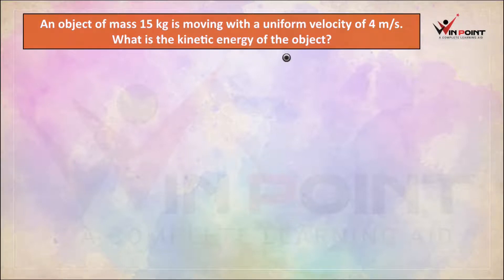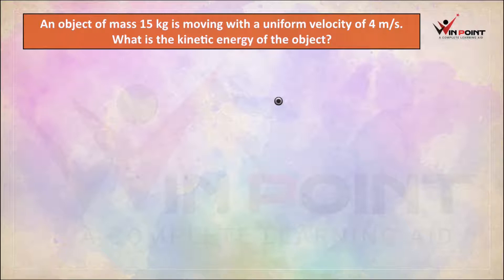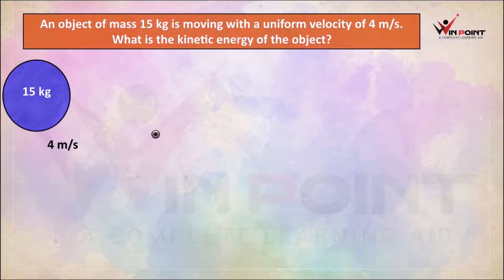Here, there is an object moving with a velocity of 4 m/s. The mass of the object is 15 kg. We need to find kinetic energy. What is the equation for kinetic energy? Kinetic energy is equal to half mv squared.